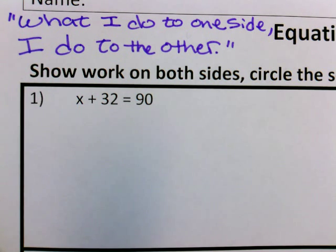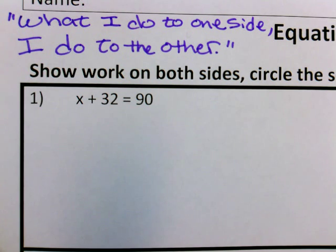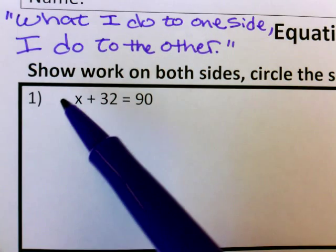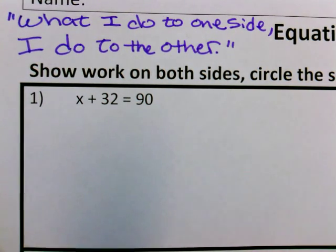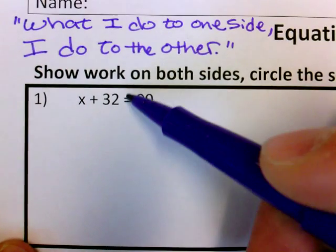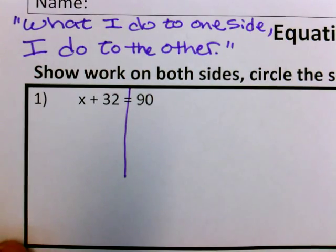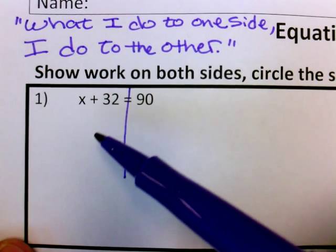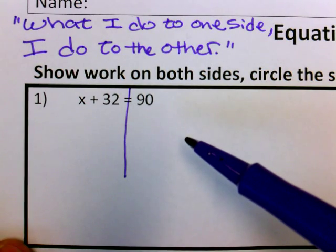In this first problem, I have x plus 32 equals 90. A lot of students are going to say, well, I don't see two different sides. In order to get them to visually see that there are two different sides — the two different sides of the equal sign — we have them draw a line straight down through the equal sign. By doing that, we now have two sides: the left side of the line and the right side of the line.